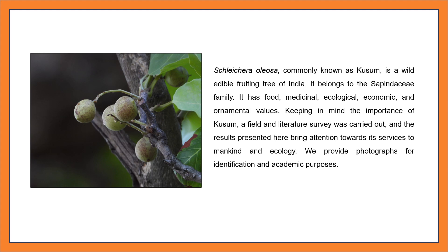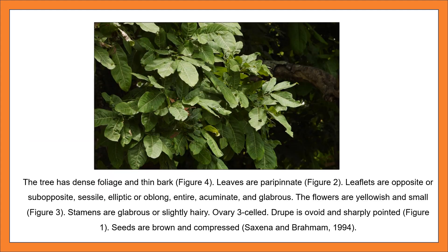Photographs are provided for identification and academic purposes. You can observe the leaves — the tree has dense foliage and thin bark. Leaves are paripinnate; leaflets are opposite or sub-opposite, sagely elliptic or oblong, entire, acuminate, and glabrous. The flowers are yellowish and small. Stamens are glabrous or slightly hairy. The drupe is ovoid and sharply pointed. Seeds are brown and compressed.